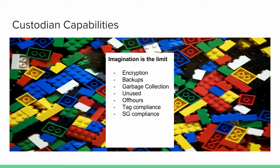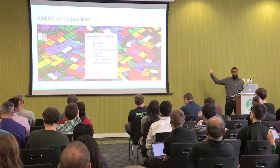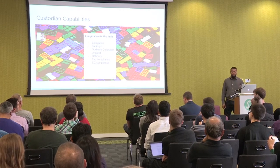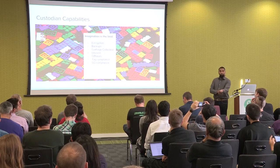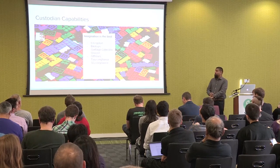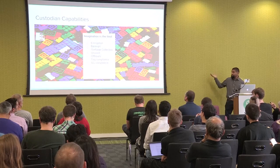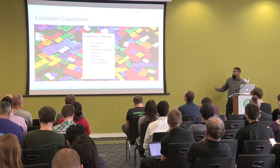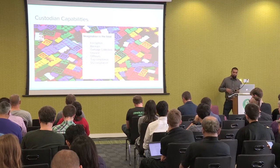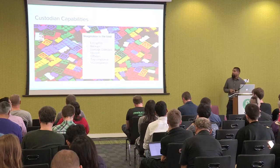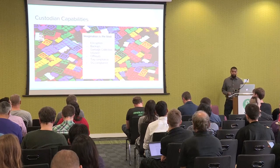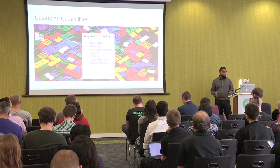People often ask me what you can do with Custodian. If I took all the filters and actions and tried to do a combinatorial expansion, the numbers are in the millions. You're primarily limited by what you're able to construct as a policy — it's just Lego bricks. At Capital One we do mandatory encryption and imposing behaviors on top of the AWS APIs, standard backups, garbage collection, turning things off at night, on the weekends with custom schedules.